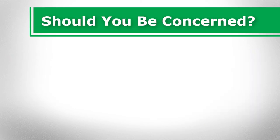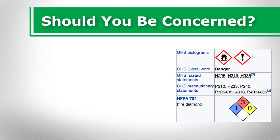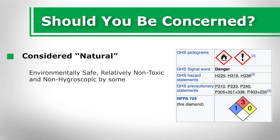Why should you be concerned about ethyl acetate? Although ethyl acetate is a solvent that is considered natural due to it being found in nature, the chemical actually used is synthetic and not naturally derived. Ethyl acetate has been deemed environmentally safe, relatively non-toxic, and non-hygroscopic by some. However, this chemical is on the hazardous substance list due to it being regulated by several agencies.